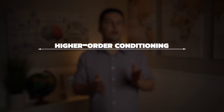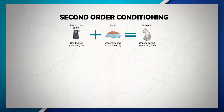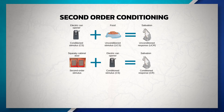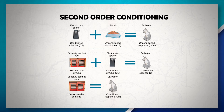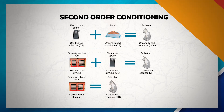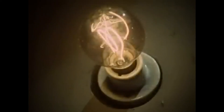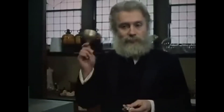Last but not least, there's higher order conditioning, also known as second order conditioning. This is when conditioning has already occurred and a new neutral stimulus is presented to a subject to be paired with an already conditioned stimulus. When this happens, the neutral stimulus becomes the new conditioned stimulus without the unconditioned stimulus being present. For example, if Pavlov turned on a light and then rang the bell, then gave the dog food, the dog would start to associate the light with the bell — which is already associated with the food — resulting in the dog eventually salivating at the light being turned on. In this example, the light was never paired with the food; it was only paired with the bell.